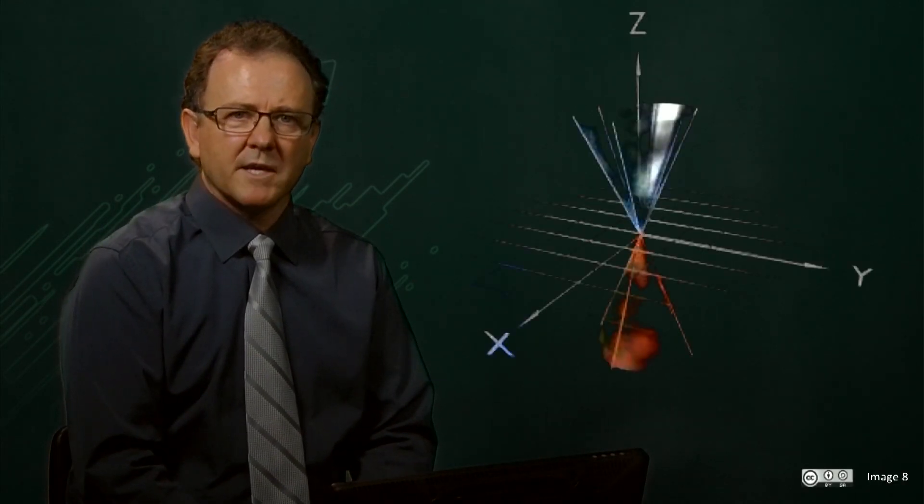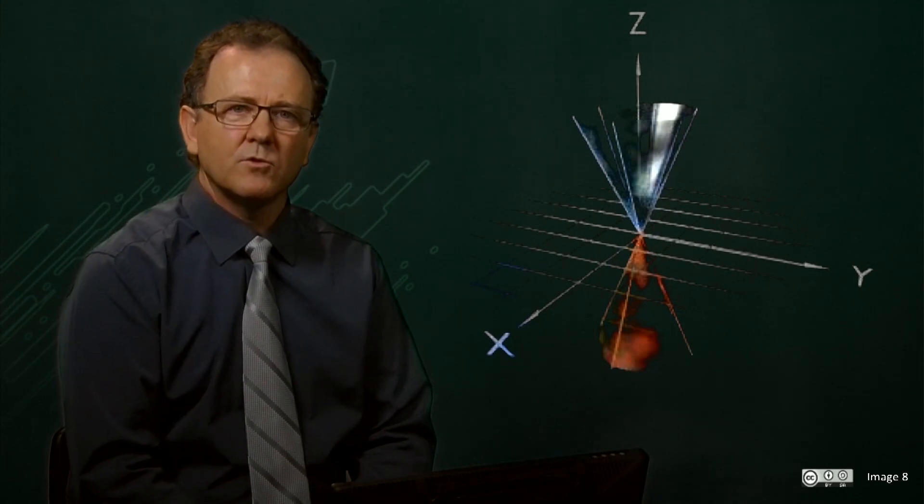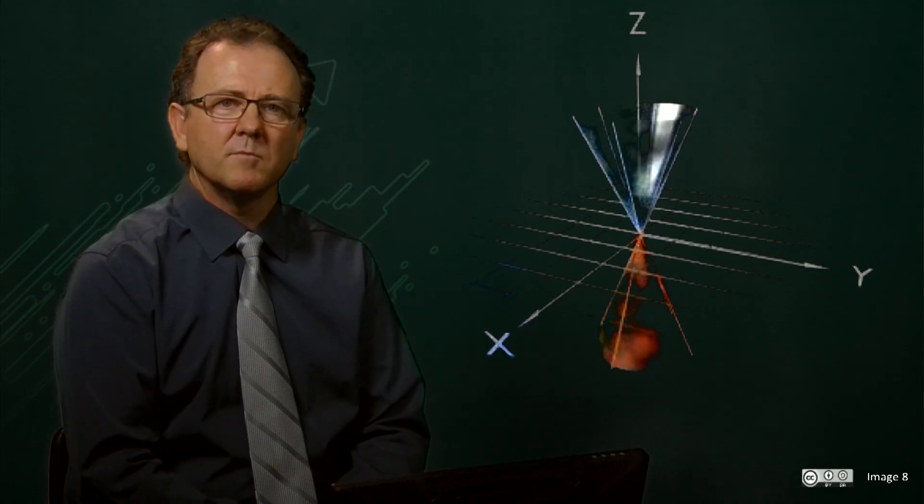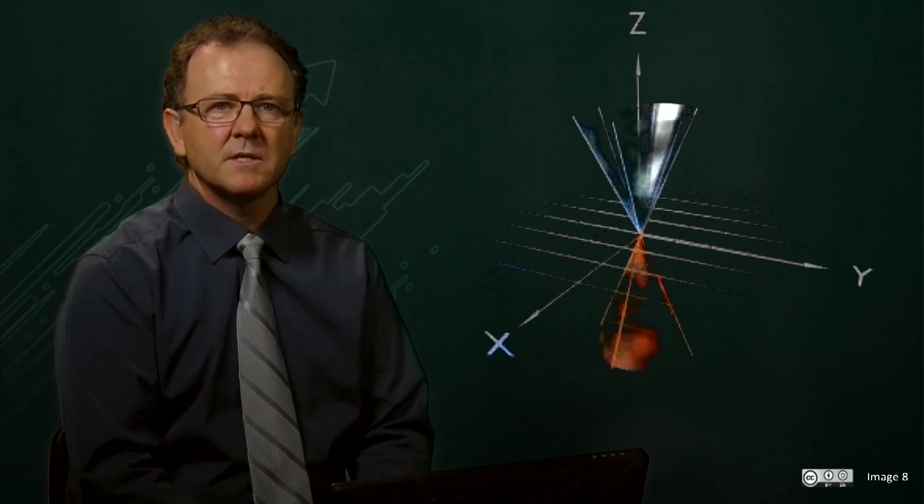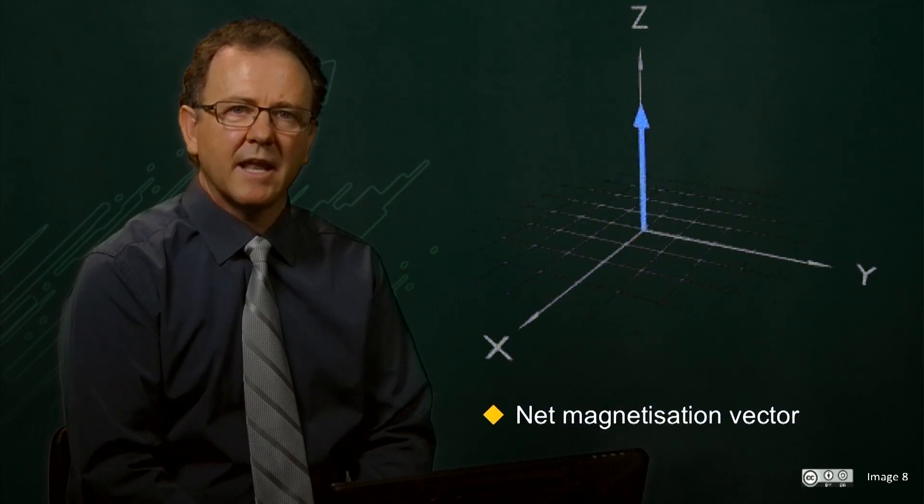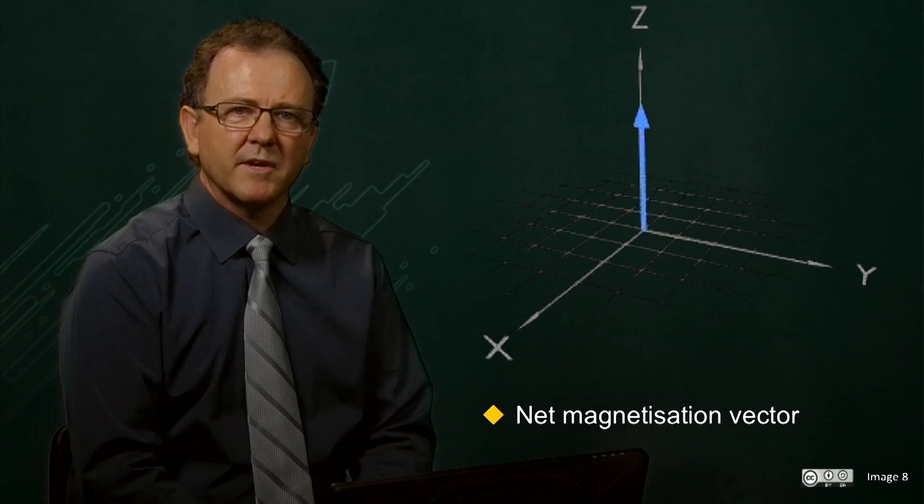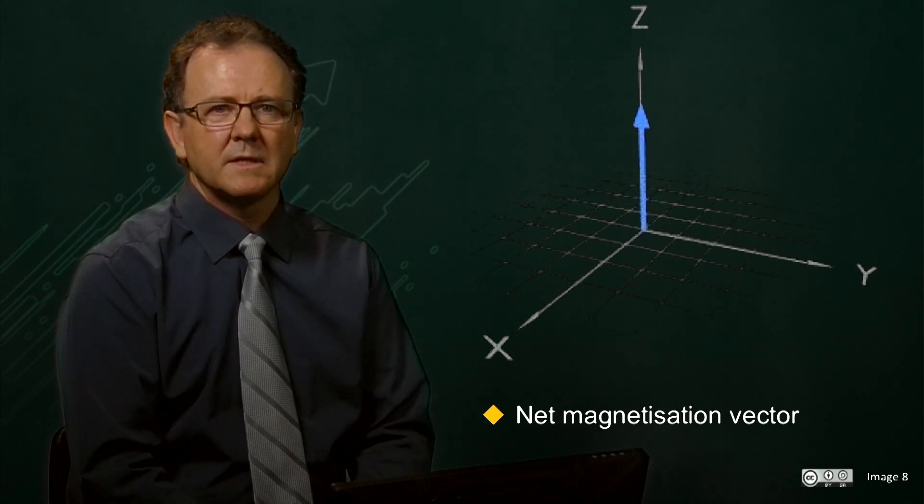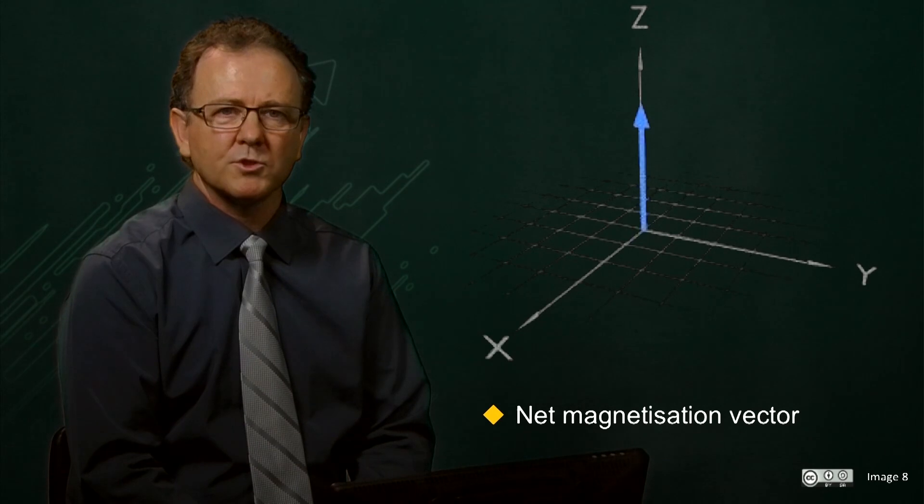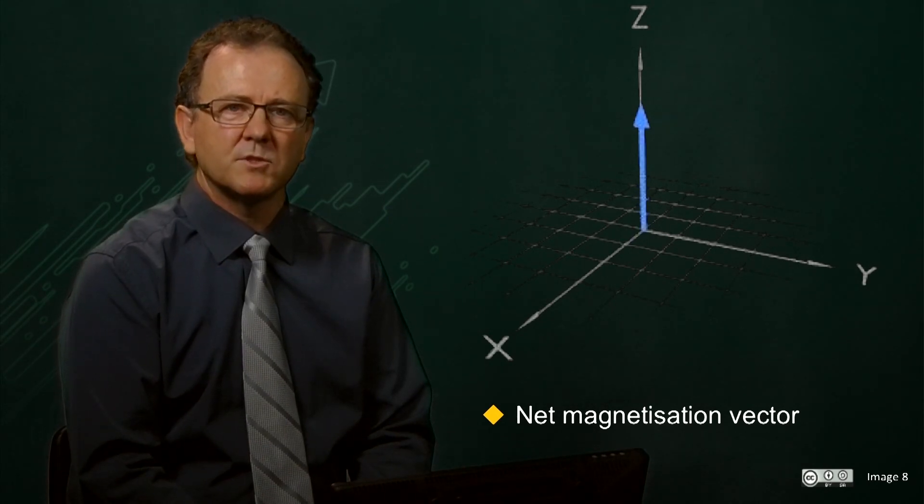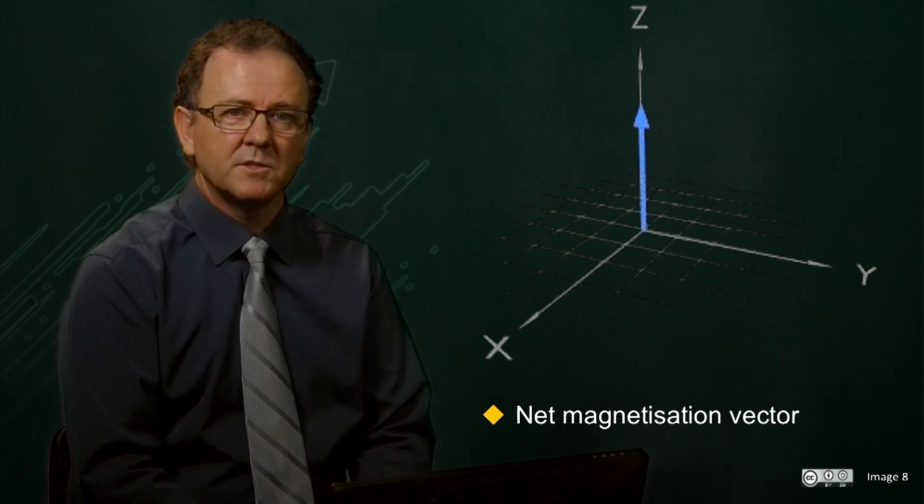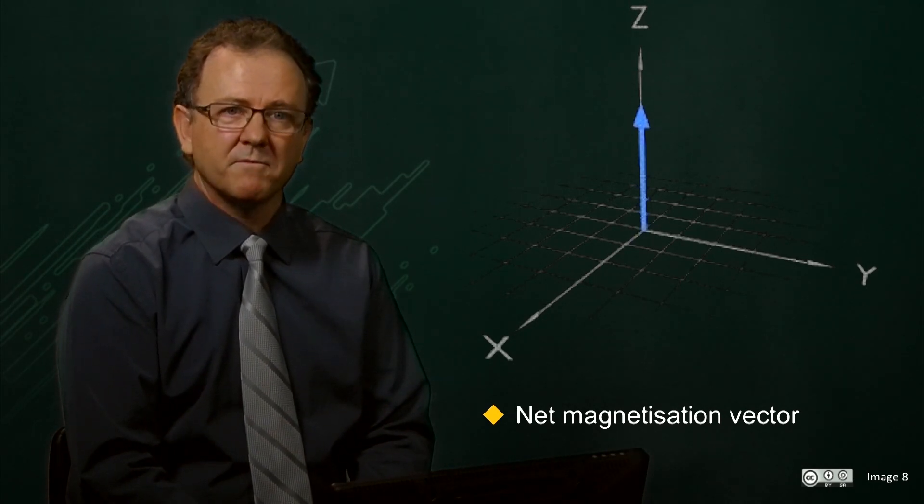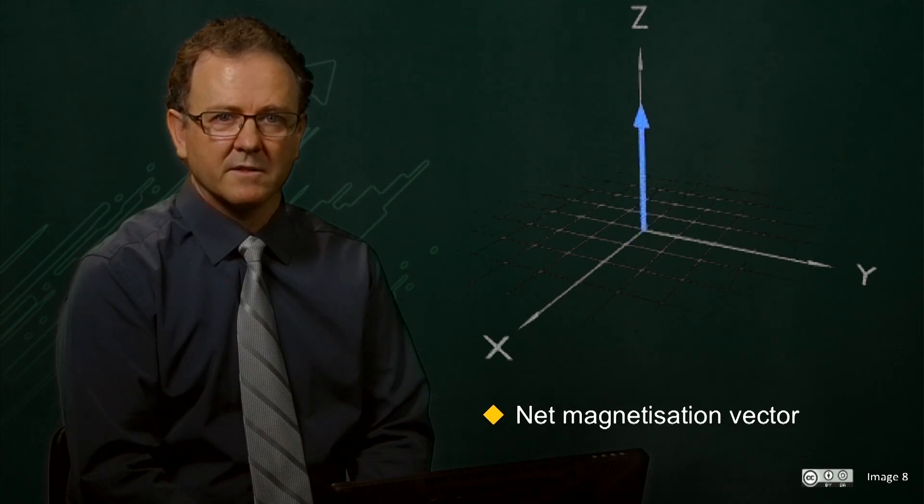When we do an MRI scan, we are detecting the total average of all of the magnetic moments, which is simply the sum of all the spin vectors and we refer to this as the net magnetization vector. The net magnetization vector points along the Z axis at equilibrium and its magnitude is proportional to the population difference between the two energy levels. The signal we obtain in the MRI image is determined by the fate of this magnetization vector during the scan.